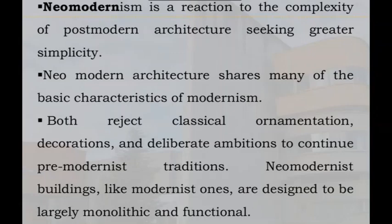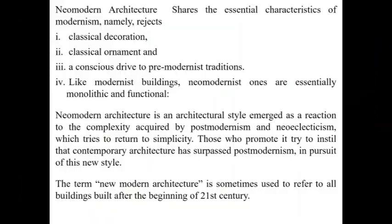Neo-Modern architecture shares many of its basic characteristics with Modernism. Both reject classical ornamentation, decorations and deliberate ambitions to continue pre-Modernistic traditions. Neo-Modernist buildings, like Modernist ones, are designed to be largely monolithic and functional. Those who promote the Neo-Modernistic style try to instill that contemporary architecture has surpassed Post-Modernism in pursuit of this new style.